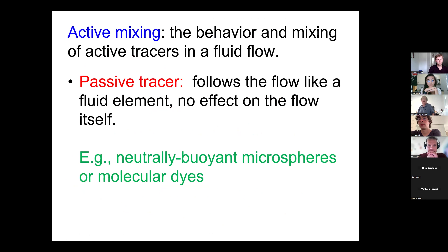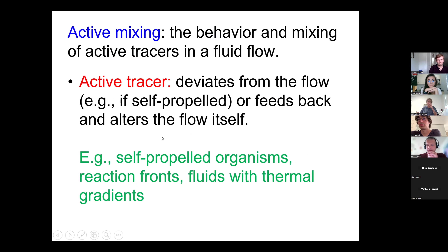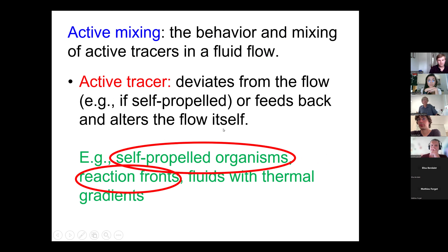Just to make sure I'm defining things properly — when we're talking about active tracers, it's important to distinguish from passive tracers. A passive tracer is one that just follows the flow without deviating from it and also without feeding back on it. So microspheres and molecular dyes are passive, versus an active tracer that deviates from the flow in some respect or sometimes feeds back and alters the flow itself. We're going to be emphasizing the first issue here, talking about reaction fronts and self-propelled organisms in fluid flows.